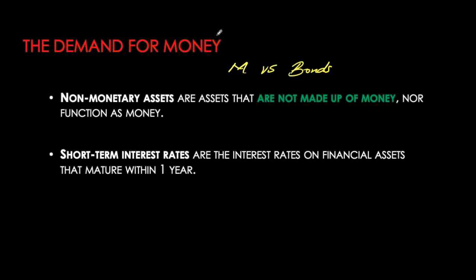This alternative asset — bonds — can be short-term or long-term. We typically compare money to short-term bonds because money is very liquid; it doesn't need to be converted into cash, it is cash itself. Long-term bonds take a very long time to mature, so instead of comparing money to long-term assets, we compare it to short-term non-monetary assets. Short-term is defined as any asset with a maturity of less than a year.